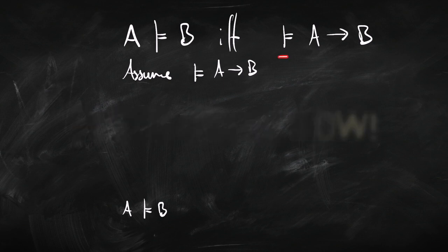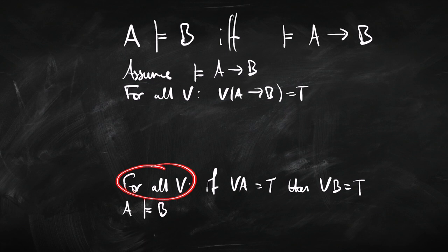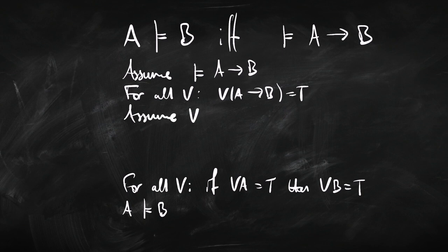So we're trying to go from here to here. If this, then this. So we're going to assume the if bit and write the then bit down at the bottom of the page. The next two lines are going to be plugging in the definitions of entailment and validity, just like we did before, but in the other order. Now we're trying to prove something about all valuations that make A true. So we're going to take an arbitrary valuation and assume that it makes A true and try and establish that it makes B true.